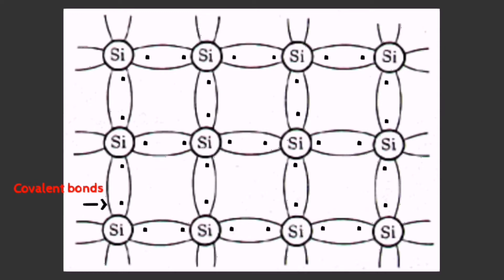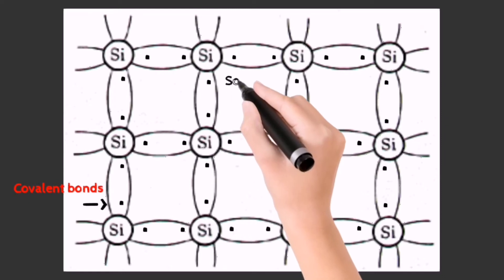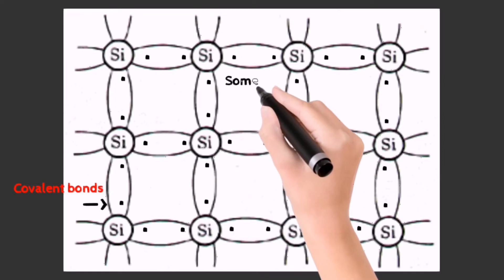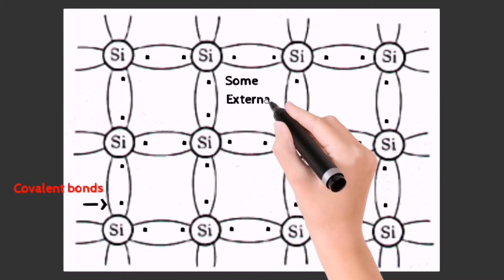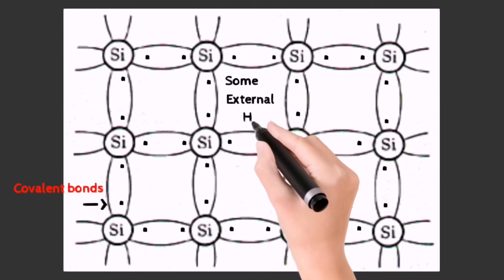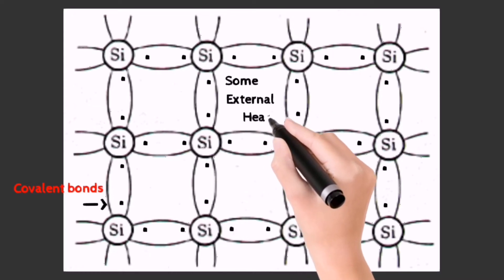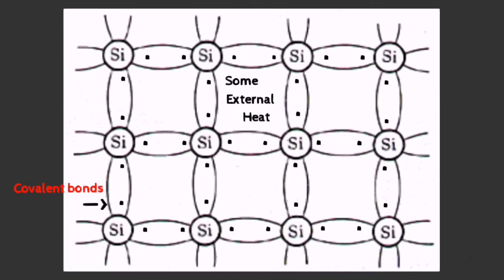At room temperature, these electrons bond closely with each other. But once some external heat is provided, these electrons gain sufficient energy and leave their position.